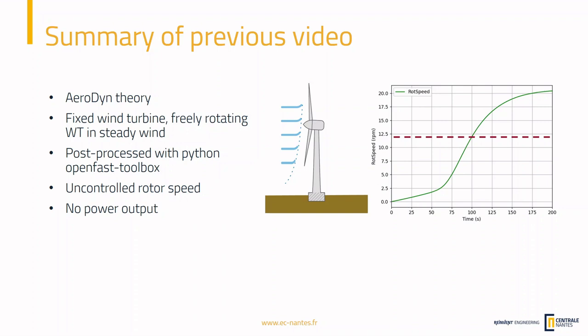We post-processed the results with Python and the OpenFAST toolbox for Python. We saw that with an uncontrolled rotor — no control and no generator — our rotor speed was too high. This line shows the nominal rotor speed designed for this turbine, about 12 rotations per minute, and we can see our rotor speed last time exceeded that by a large margin. The second drawback was no power output because we didn't model any generator. Today we are trying to fix both of these issues.